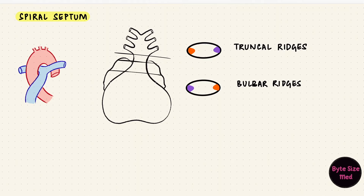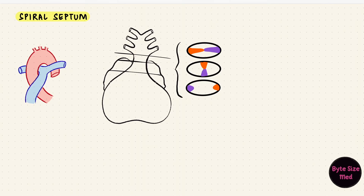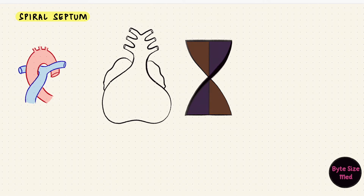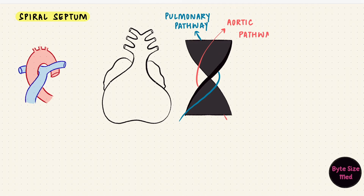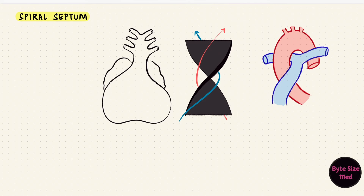If we take sections at different levels and look from above, we can see the ridges at different positions. When they fuse, they create a spiral course for the two vessels — the aorta and the pulmonary trunk. The relationship between the two tracts changes through the course: the aortic tract shifts position as does the pulmonary course. The fusion of those ridges creates a spiral septum and the paths twist around each other. The ridges in the conus cordis form an anterolateral pathway — the outflow tract of the right ventricle leading into the pulmonary trunk — while the posteromedial pathway forms the outflow tract of the left ventricle leading into the ascending aorta.